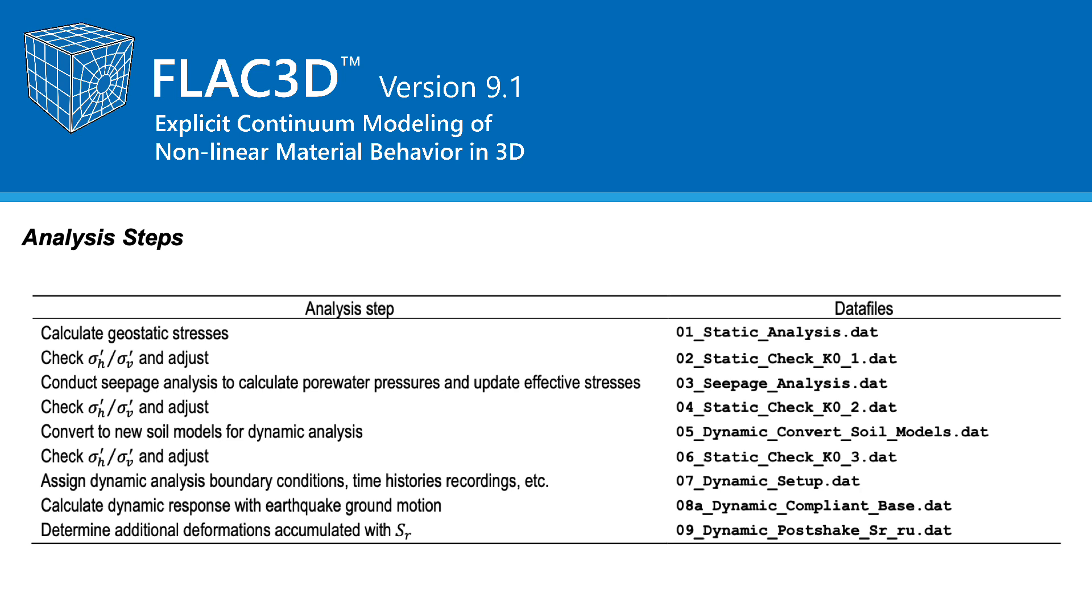The analysis sequence is composed of nine analysis steps separated into nine data files. In the first analysis step, geostatic stresses are calculated without the impacts of the reservoir. A simple modeling approach is used where mechanical equilibrium is determined for the whole model with drained Mohr-Coulomb response. With the state of stress determined, the second analysis step checks the ratio of the horizontal to vertical effective stresses and are attempted to be adjusted if unrealistic. In the third analysis step, a seepage analysis is conducted to determine the pore water pressures and the effective stresses and densities are updated. With the state of stress updated, the fourth analysis step checks the ratio of the horizontal to vertical effective stresses and are attempted to be adjusted if unrealistic.